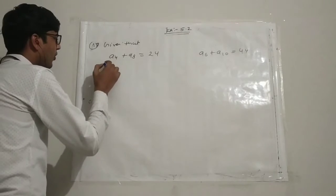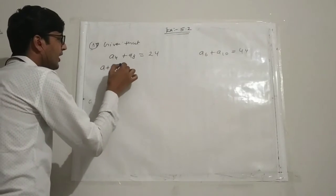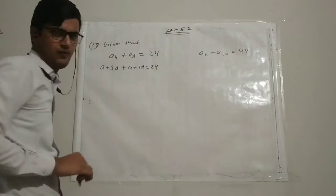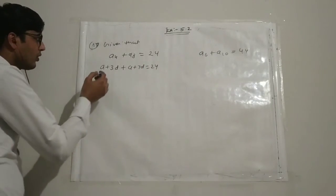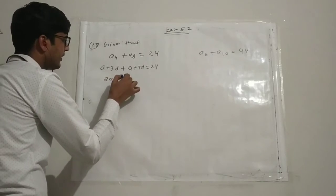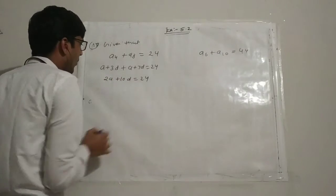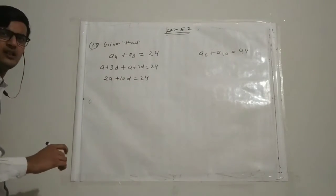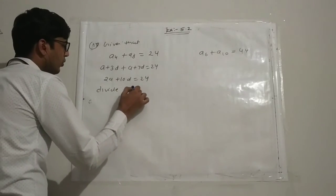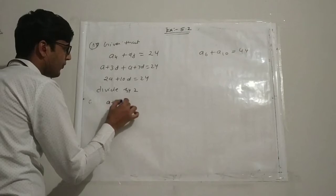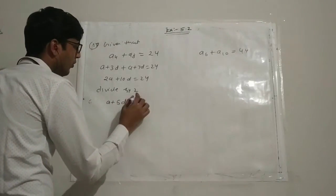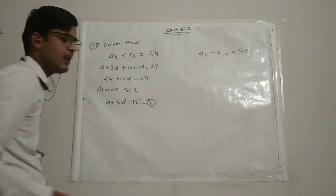Writing A4 as a plus 3d and A8 as a plus 7d: (a plus 3d) plus (a plus 7d) equals 24, giving 2a plus 10d equals 24. Dividing by 2: a plus 5d equals 12. This is equation one.